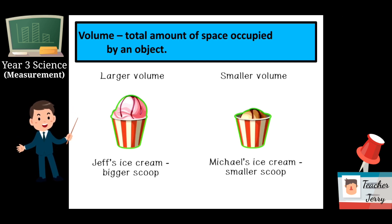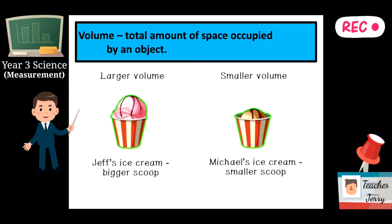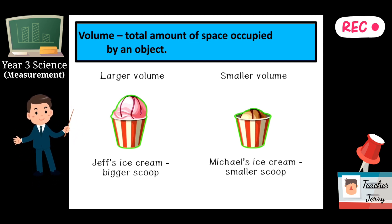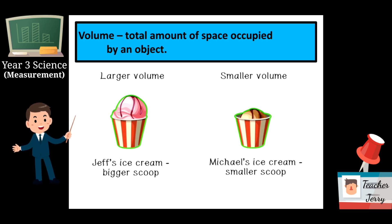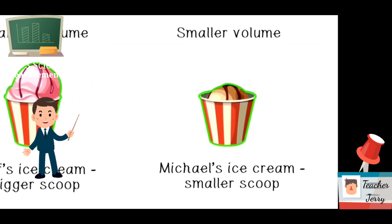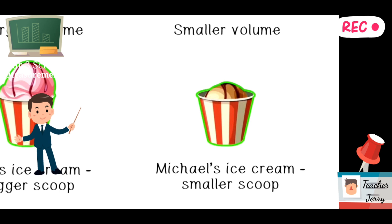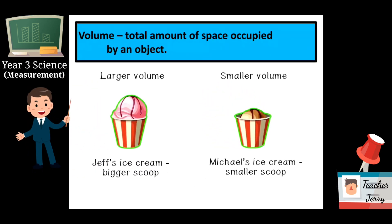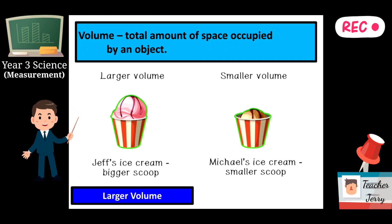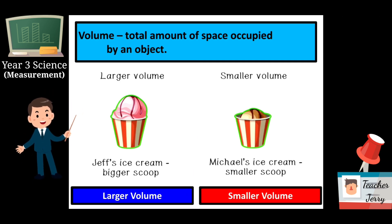So one is with a larger volume, another one is with a smaller volume. In Malay, maksudnya ice cream Jeff dipenuhi oleh scope ice cream yang lebih banyak, lebih banyak maksudnya isi padu pun lebih banyak. Manakala Michael's ice cream dipenuhi oleh scope yang kecil, itulah kita nampak isi padu dia lebih rendah dan lebih kecil. These two pictures - Michael's ice cream lebih sikit berbanding dengan Jeff's ice cream. So conclusion: which is larger volume and smaller volume - volume very easy, am I right?